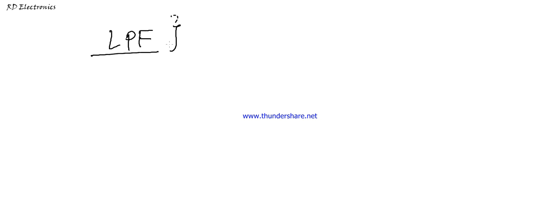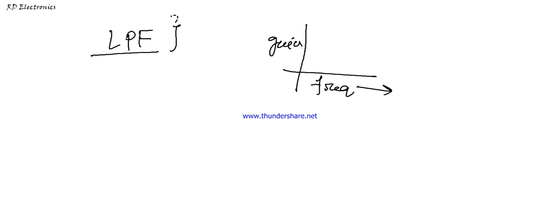Today we discuss the frequency response of first-order passive filters. There are different types of filters in electronic circuits. First, we discuss the low-pass filter — LPF — which allows only low frequency signals and attenuates high frequency signals. The ideal frequency response diagram has a frequency axis (x-axis) and gain axis (y-axis). The ideal response shows a pass band and a sharp transition band, which is practically impossible — it only exists in theory.